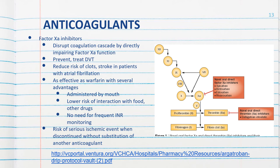These drugs should not be used in patients undergoing anesthesia or spinal puncture because they can increase the risk of long-term paralysis due to epidural or spinal hematoma. There is a serious risk of ischemic events when they are discontinued suddenly without substituting another anticoagulant. You can click on the link here to access another drug protocol resource to get familiar with these different drugs.